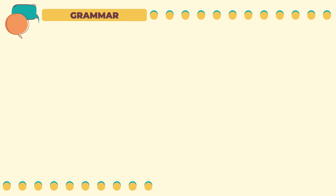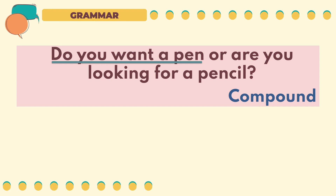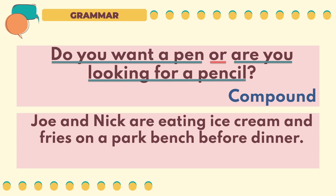Second to the last sentence: 'Do you want a pen, or are you looking for a pencil?' This is a compound interrogative sentence. The first simple interrogative sentence is 'Do you want a pen?' and the second is 'Are you looking for a pencil?' These are joined with the coordinating conjunction 'or.' Last sentence: 'Joe and Nick are eating ice cream and fries on a park bench before dinner.' This is a simple sentence that has both a compound subject and compound verb. The compound subjects are Joe and Nick, and the compound verbs are eating and are eating ice cream and fries.